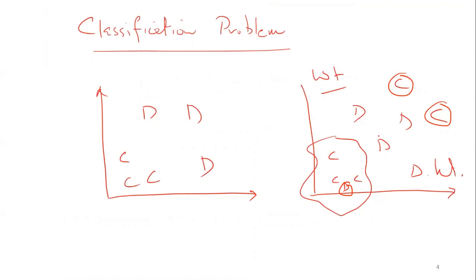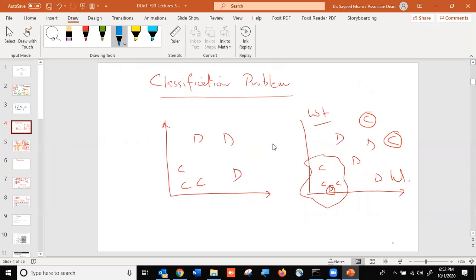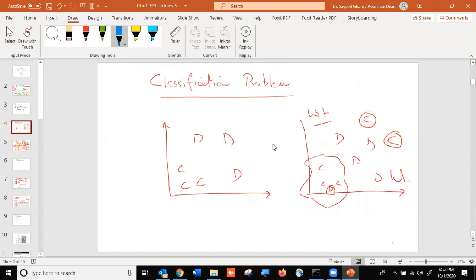For a non-linearly separable problem — say dogs clustered in the middle and cats on the outside — you might need a green circular boundary. This is where the non-linear activation function becomes critical. If you don't have a non-linear activation function in your neural network, you cannot represent these non-linearities.